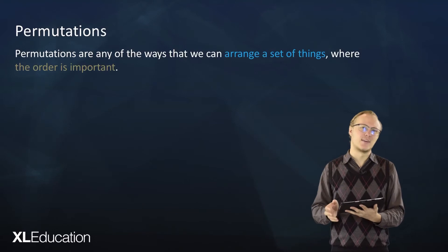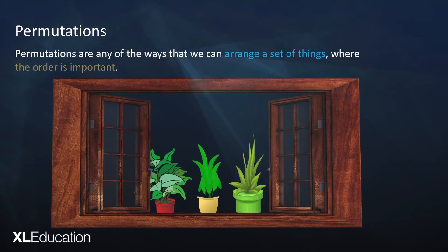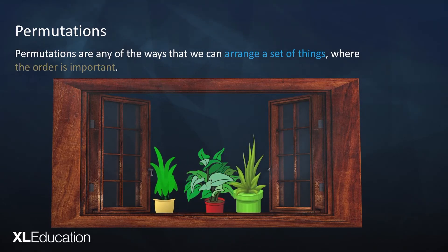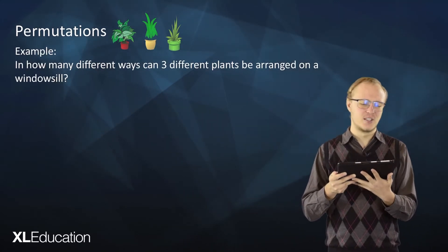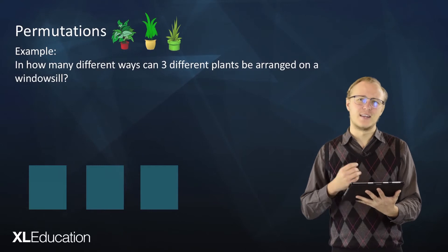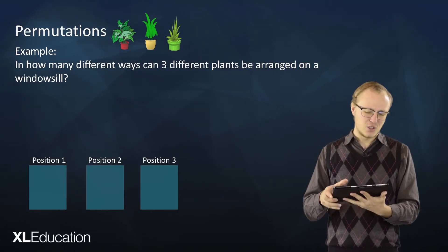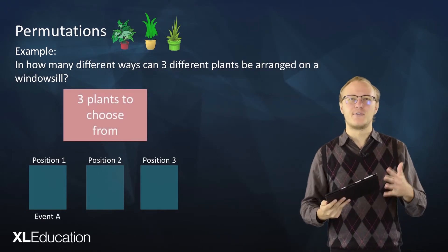Permutations are any of the ways we can arrange a set of things where the order is important. For example, you might have a windowsill with three plants — and you might be a bit picky about how to arrange them. Each different arrangement is a possible permutation. The question is: in how many different ways can three different plants be arranged on a windowsill? We think of it in terms of position one, position two, and position three.